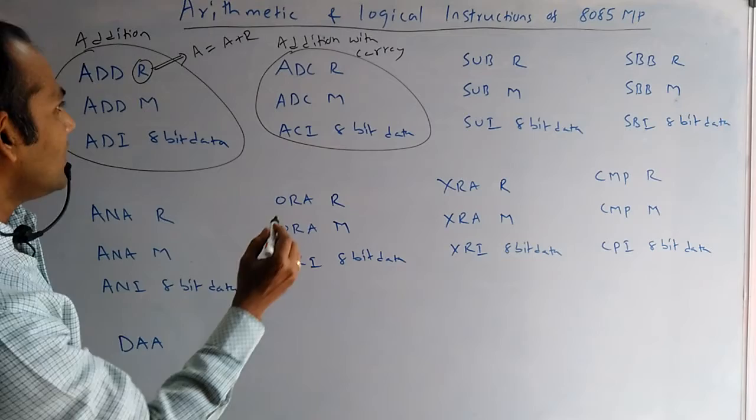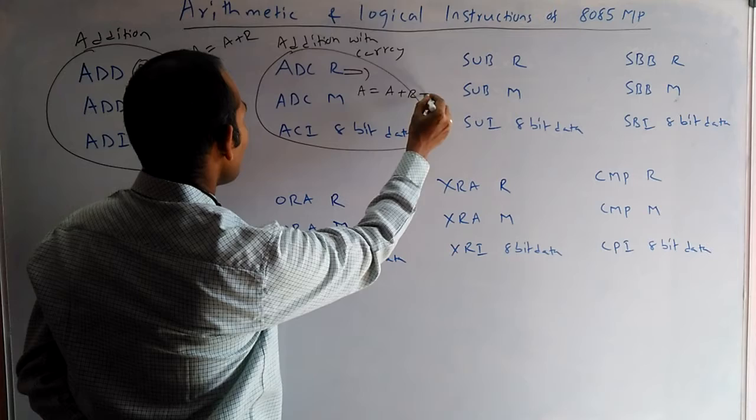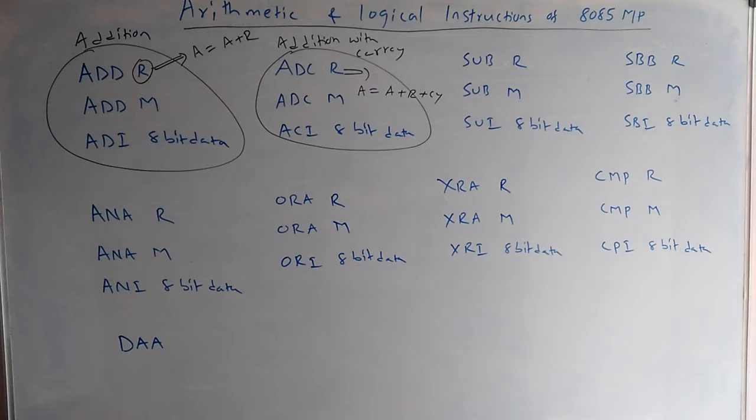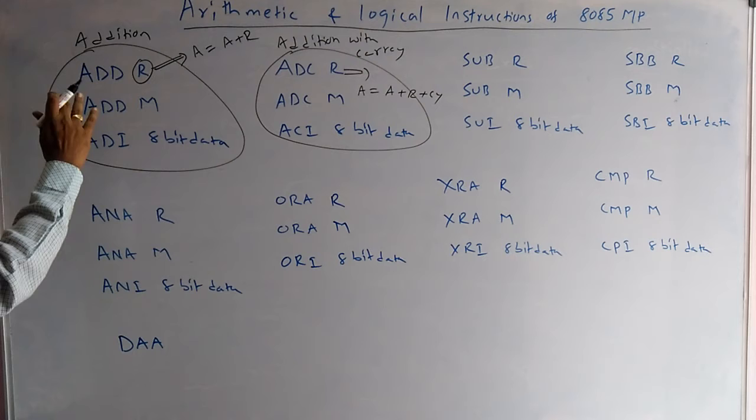For addition with carry, A equals A plus R plus CY — the previous carry is also added. These are normal addition and addition with carry instructions.